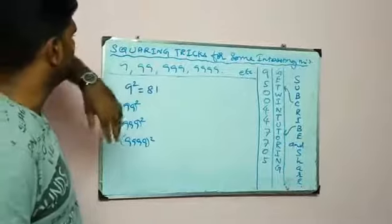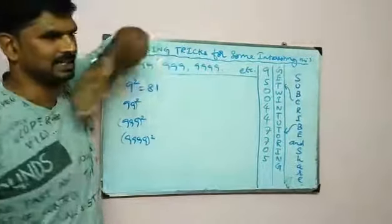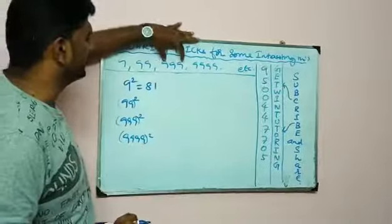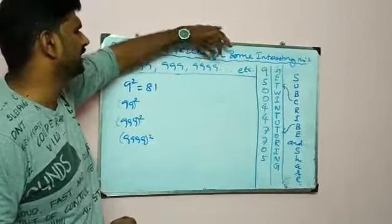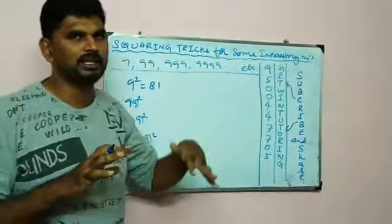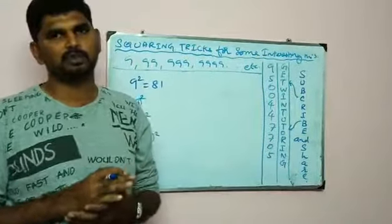Squaring tricks means 9 series. 9 series is 9, 99, 999, 9999. This is my 9 series rule number 7. Every Vedic Mathematics concept is squared.